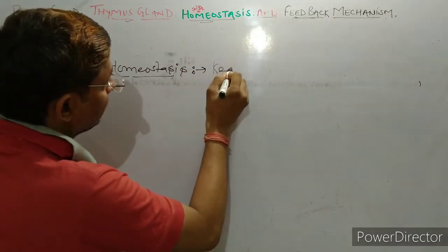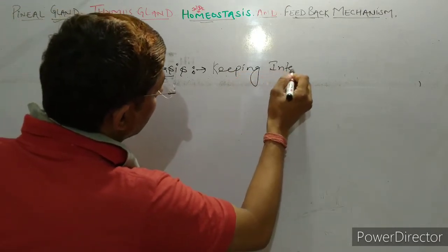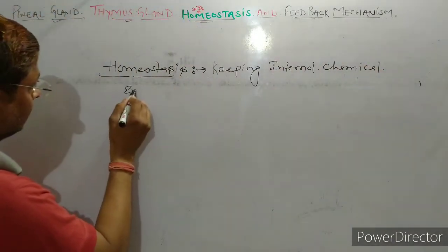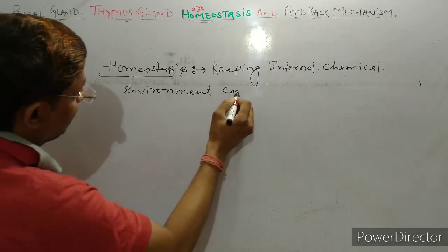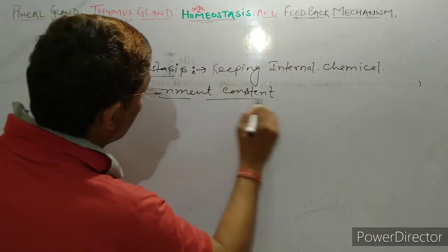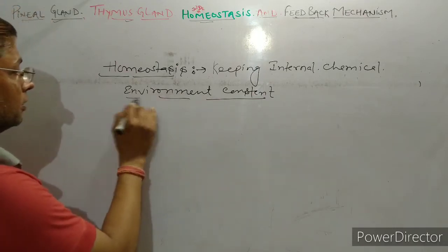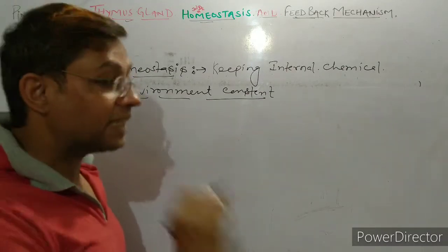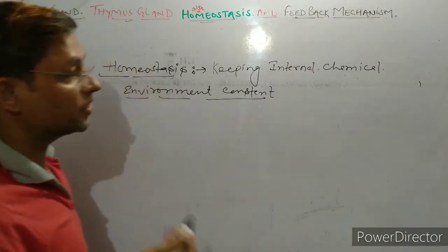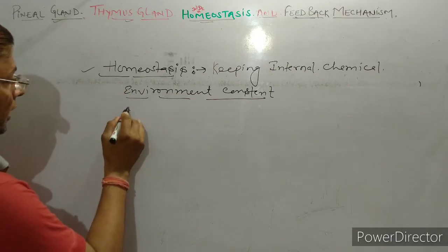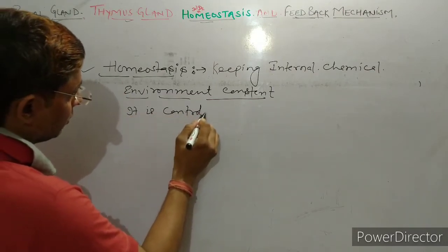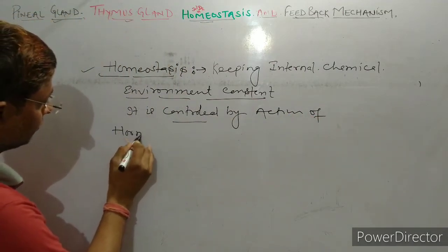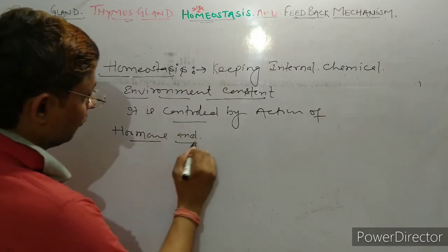Homeostasis means keeping the internal chemical environment balanced — minerals, ions, etc. उनका balance ही homeostasis है. And this homeostasis is controlled by hormones as well as feedback mechanism.